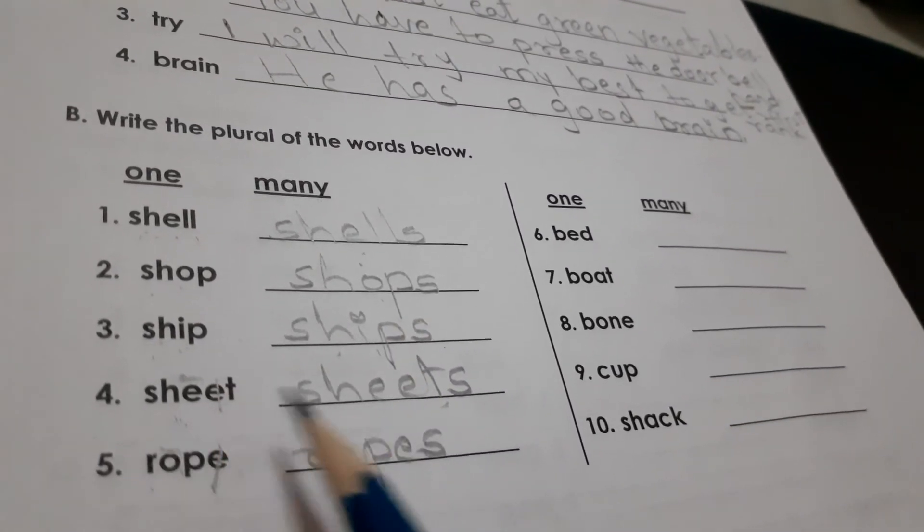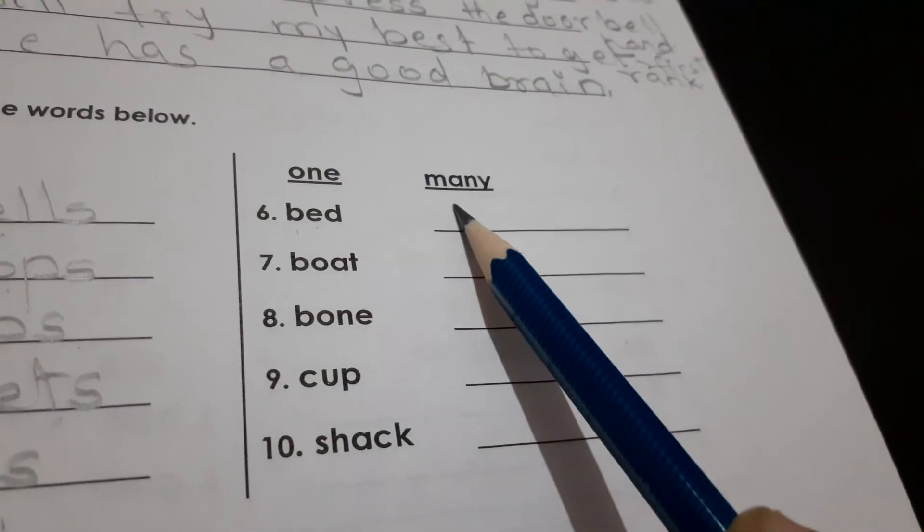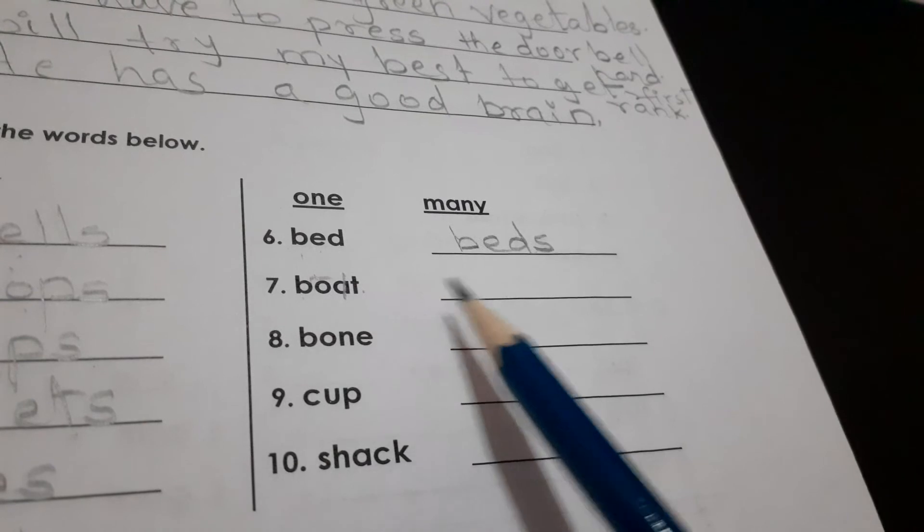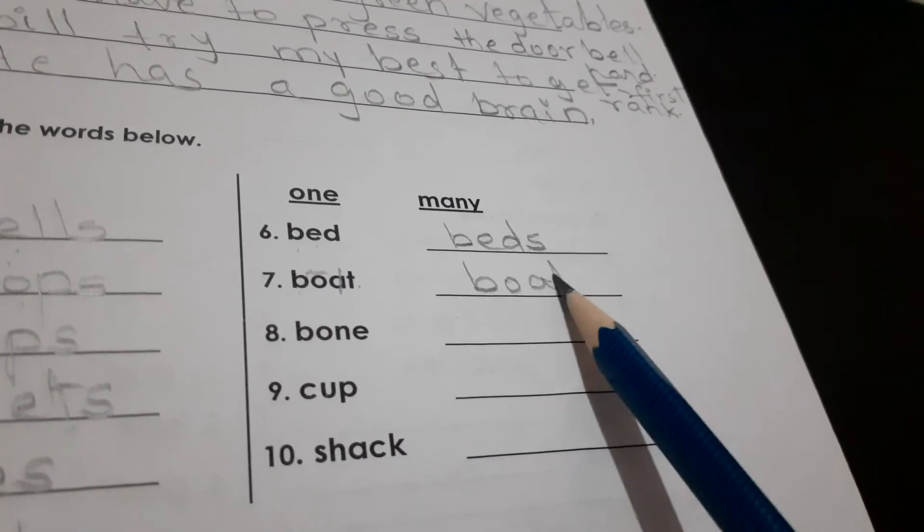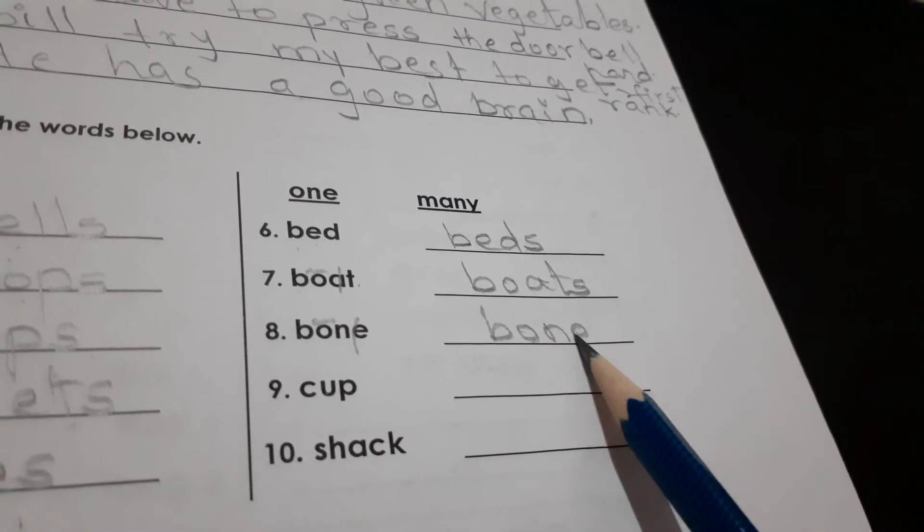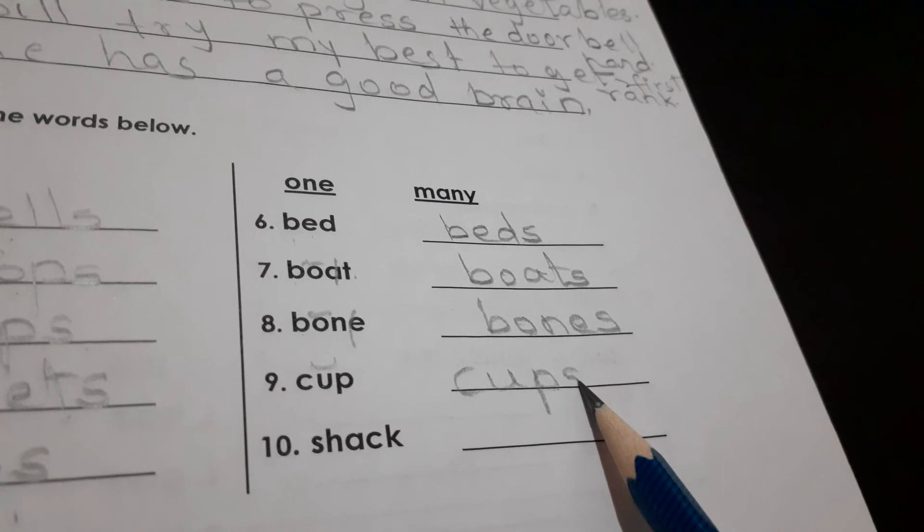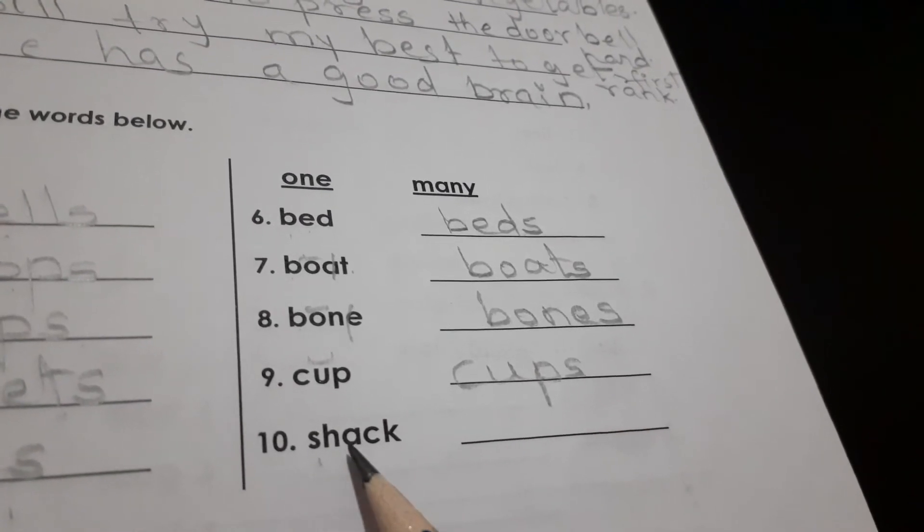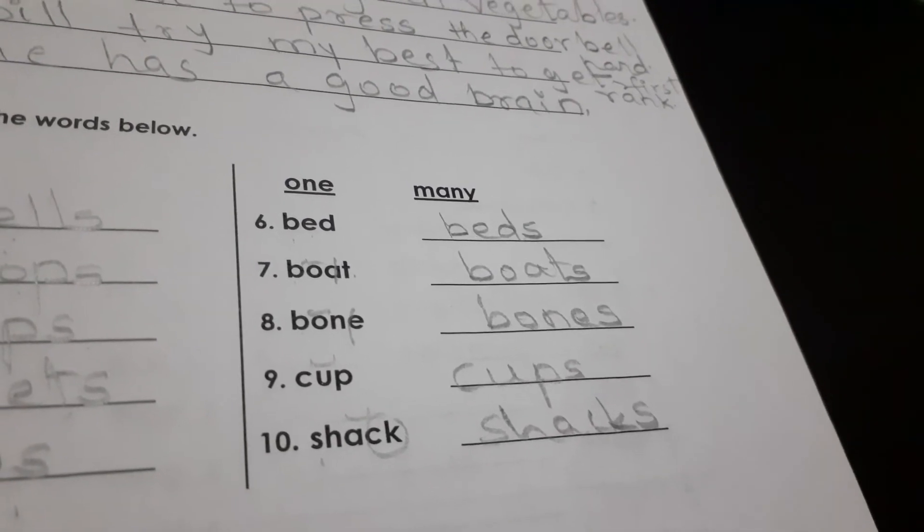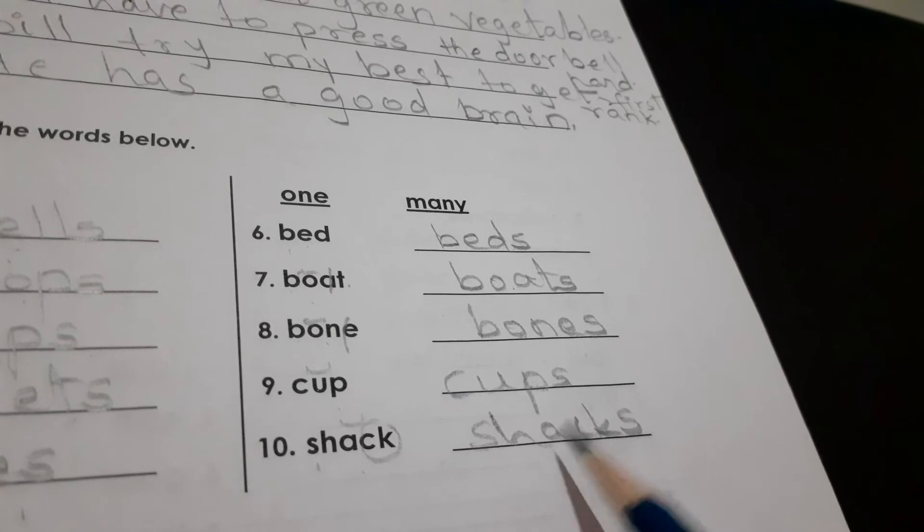Ships, sheet, sheets, rope, ropes. Bed, beds. Boat, boats. Bone. Right. Same to same then add S. Bones. Cup. Add S. Cups. Shack. Shack. Add S. Shacks. Bed, beds. Boat, boats. Bone, bones. Cup, cups. Shack, shacks.